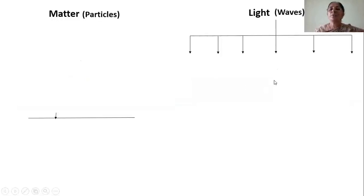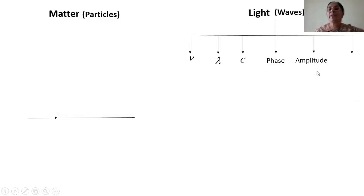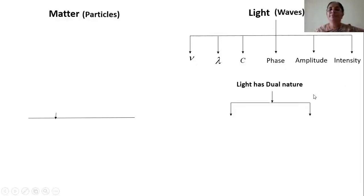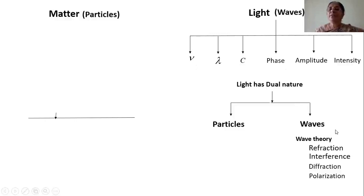Light has so many properties: it has frequency, it has wavelength. If we know frequency and wavelength, we can determine the velocity of the light wave. We can ask what is the phase between the light waves, what is the amplitude, what is the intensity. Light has dual nature — particle nature and wave nature. The wave nature is based on wave theory. Phenomena like refraction, interference, diffraction, and polarization all prove that radiation is moving in the form of waves.